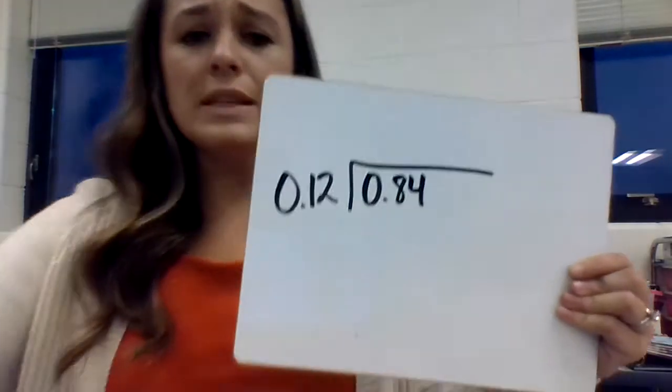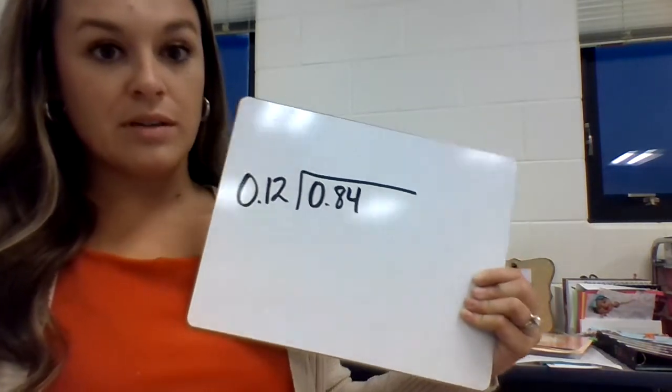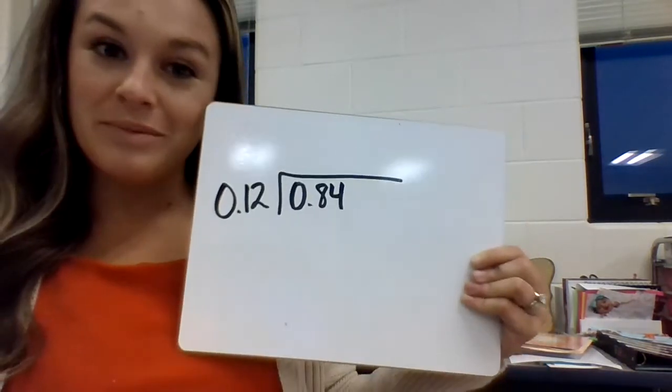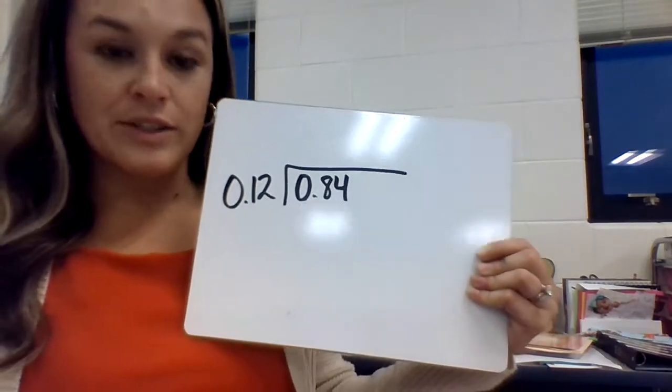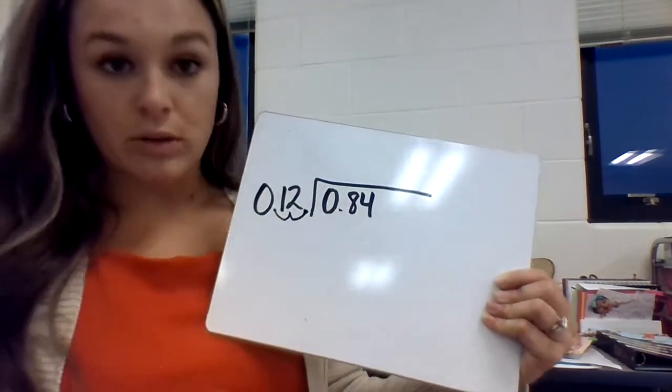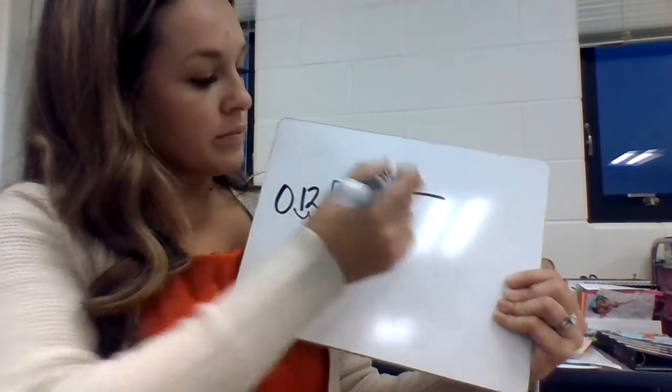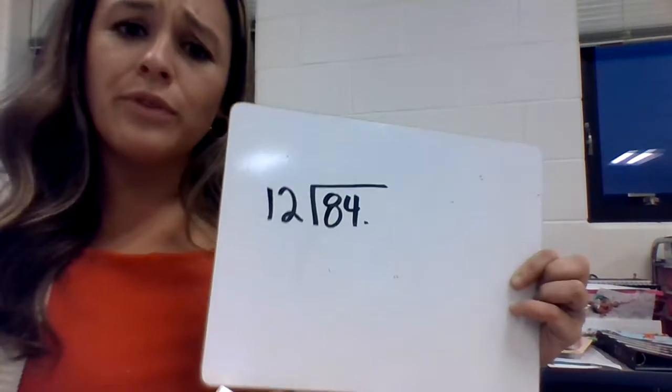The next example. This is 0.12 divided by 0.84. Do you all remember what we have to do here? We want to make the divisor a whole number, so we have to move the decimal 1, 2 times to make it a whole number. Then we have to do the same exact thing over here. 1, 2. That makes the problem 12 divided by 84.